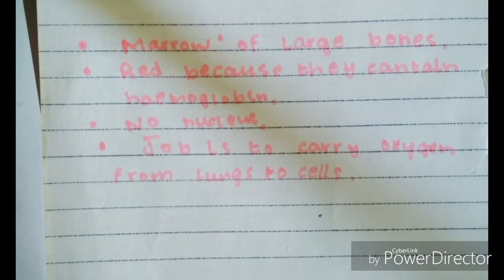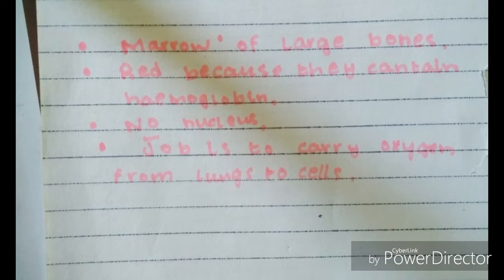Red blood cells are made in the marrow of large bones. They are red because they contain hemoglobin. They have no nucleus. Their job is to carry oxygen from lungs to the cells.